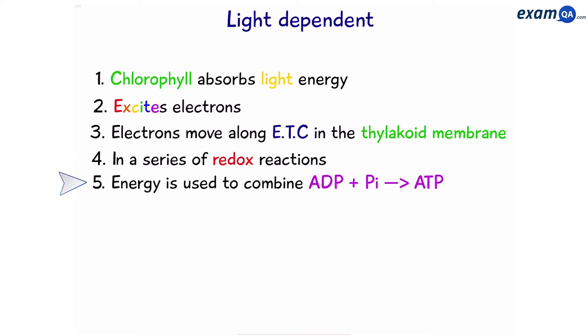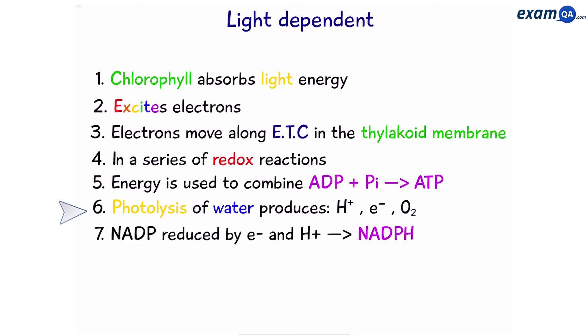Number 5: Energy is used to combine ADP and inorganic phosphate to form ATP. It's crucial that you say inorganic phosphate or put a Pi next to it. Number 6: Photolysis of water produces hydrogen ions, electrons and oxygen. And finally, Number 7: NADP is reduced by gaining electrons and hydrogen ions to form NADPH.